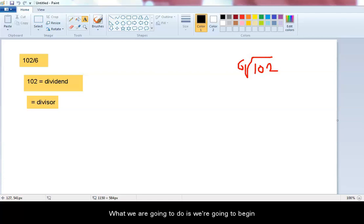So what we are going to do is we are going to begin small. We start small. We begin with 1. 6 into 1. 1 cannot divide 6. 1 is smaller than 6. That means 6 cannot go into 1.